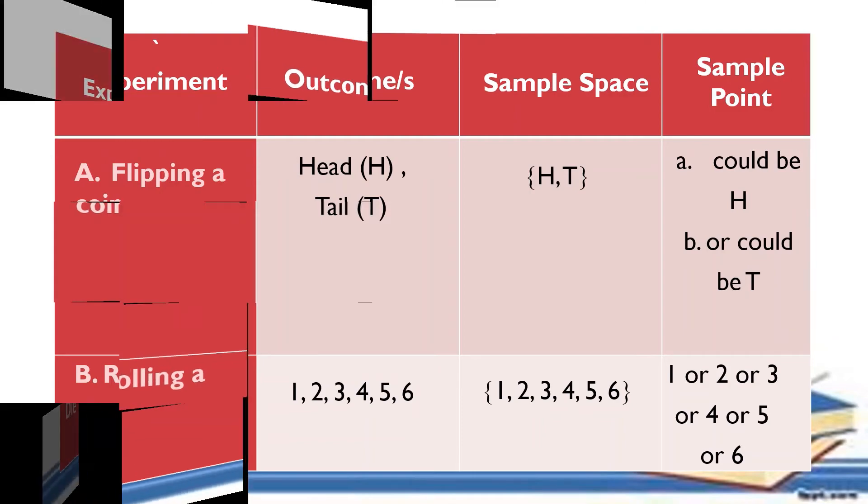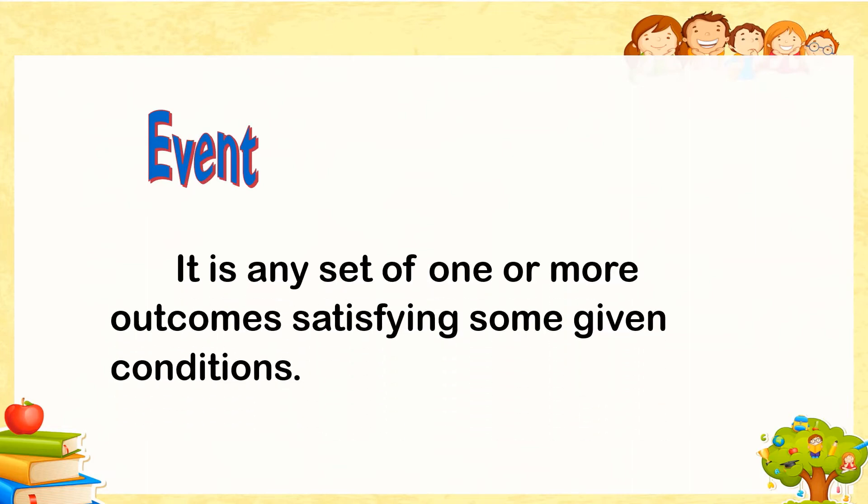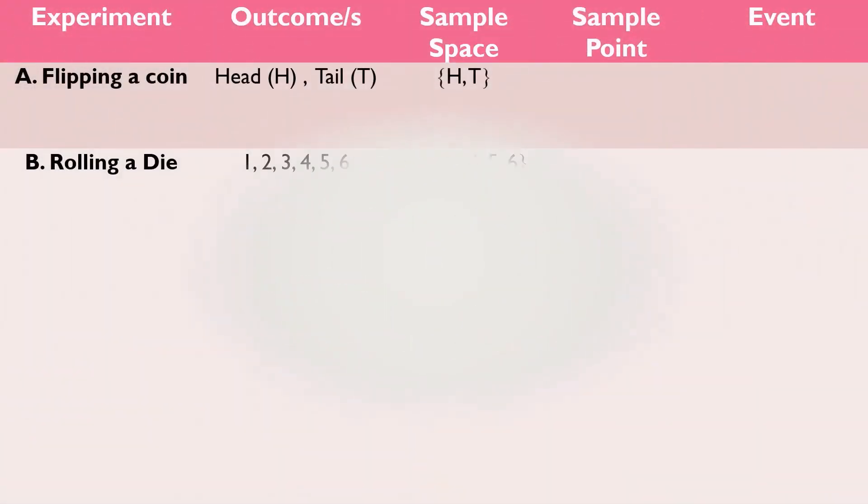And the last term that we may encounter is the event. So, what is the event? The event is any set of one or more outcomes satisfying some given conditions. Try here another example. We have here the experiment, outcomes, sample space, sample point, and event. We will proceed to the sample point. For sample point, it could be the head or the tail. For the event, there are two possible answers. We can have getting a head or getting a tail.